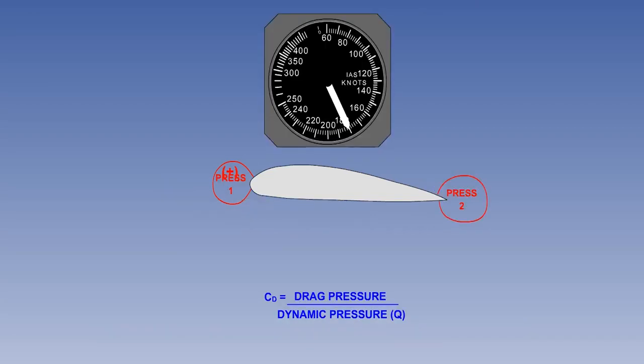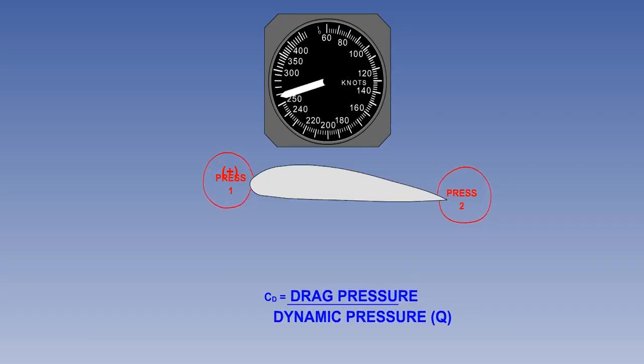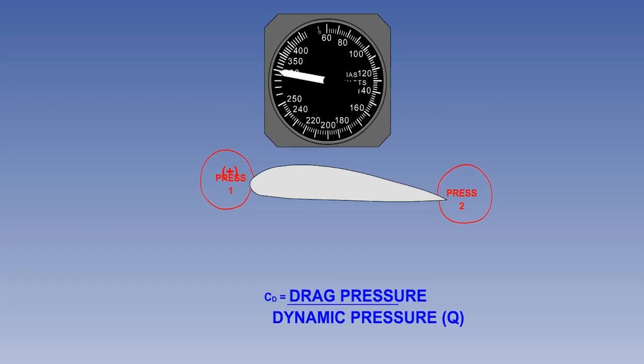A drag coefficient, CD, is the ratio between drag divided by wing area and dynamic pressure. As speed increases, assuming a constant density, CD will remain constant, since drag pressure and dynamic pressure are increasing in the same proportion.